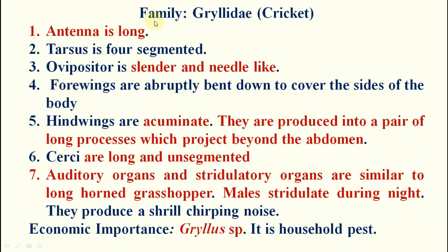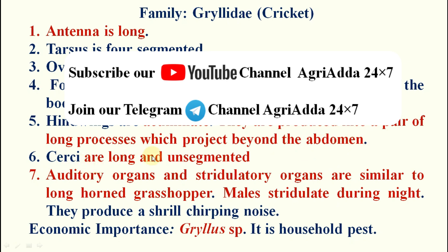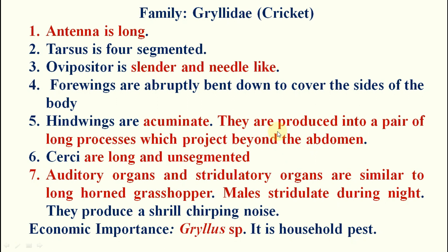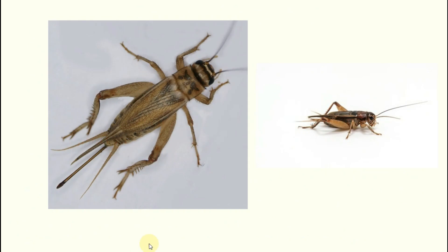Family Gryllidae — example: crickets. Antennae are long; tarsus is four-segmented. Ovipositor is slender and needle-like. Fore wings are abruptly bent down to cover the sides of the body; hind wings are reduced but project beyond the abdomen as a long pair of processes hidden by the tegmina. Cerci are long, unsegmented, and needle-like. The stridulatory organ is similar to that of longhorn grasshoppers (alary type). The tympanal organ is on the fore tibia. Economic importance: Gryllus species — household pest.